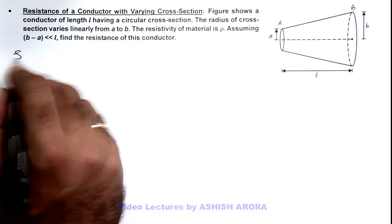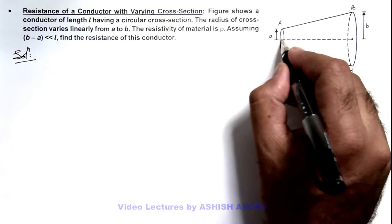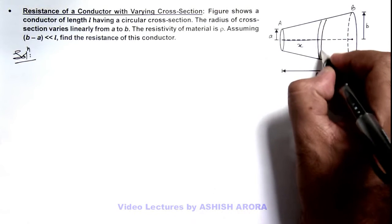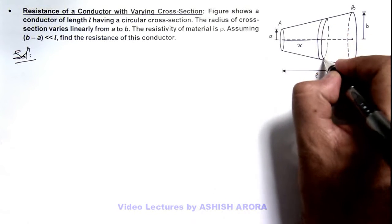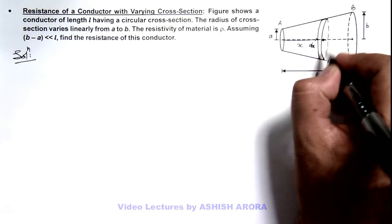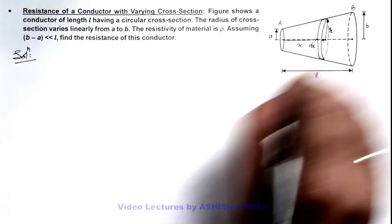Now in this solution, we can write for this linear variation, if we consider at a distance x an elemental disc which is of width dx.